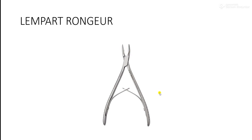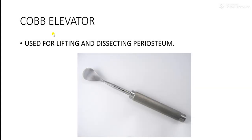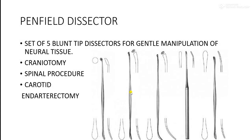The Cobb elevator has blunt tips and is used for lifting and dissecting the periosteum during neurosurgery as well as spinal surgeries. Next are the Penfield dissectors — this is a set of five blunt-tip dissectors used for gentle manipulation of neural tissues.